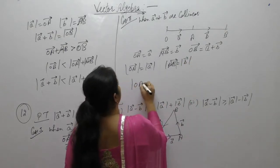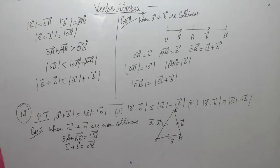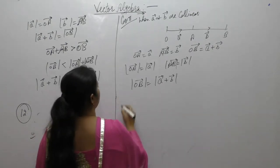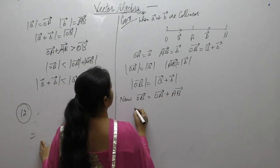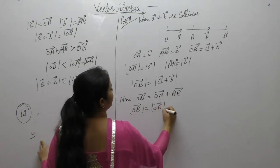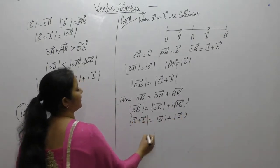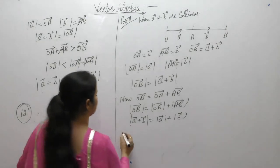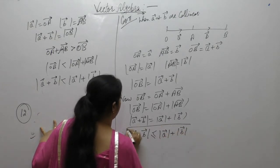The magnitude of OB vector is equals to A vector plus B vector magnitude. Now OB vector is equals to OA vector plus AB vector. So magnitude of OB vector is equals to magnitude of OA and AB. So magnitude of A vector plus B vector is equals to A plus B. Here we have proved that magnitude of A vector plus B vector is less than or equal to magnitude of A vector plus magnitude of B vector.